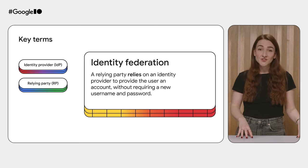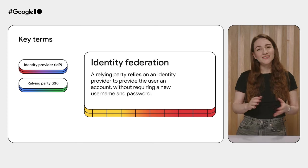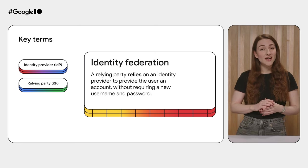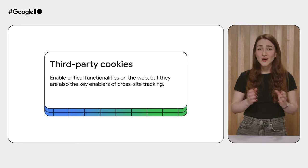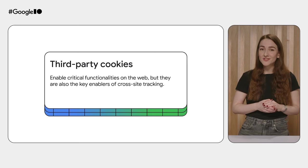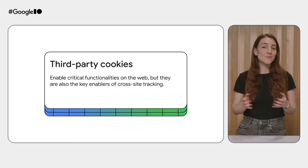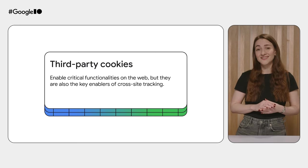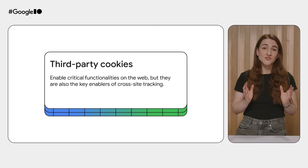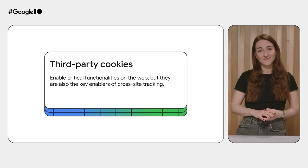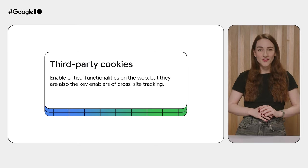Identity Federation has played a central role in raising the bar for authentication on the web. However, some Identity Federation providers still rely on mechanisms such as third-party cookies. Third-party cookies have been used to enable critical functionalities on the web across sign-in, fraud protection, advertising, and embedding rich third-party content. But at the same time, they're also the key enablers of cross-site tracking.